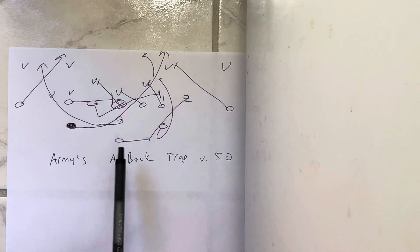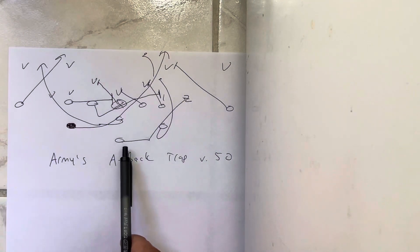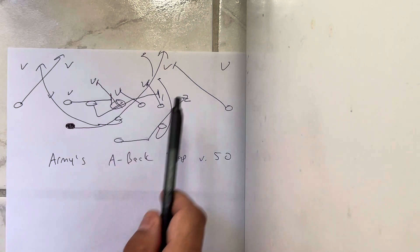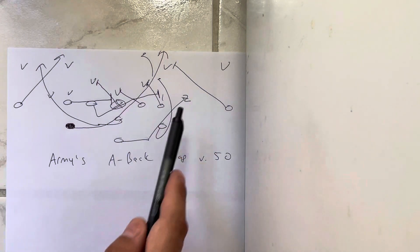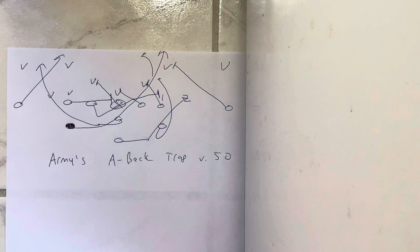The B-back is going to kick out number two. So if you're trapping the guy over the tackle, he kicks out the next guy. So he's going to take three flat steps, step at 45 degrees, get his helmet to the left, right forearm through him, trap him, and drag him out of bounds.